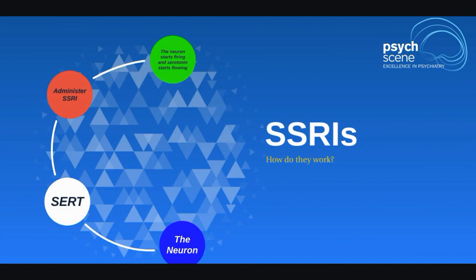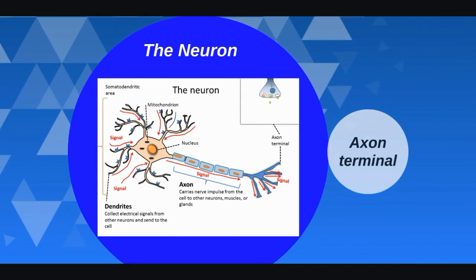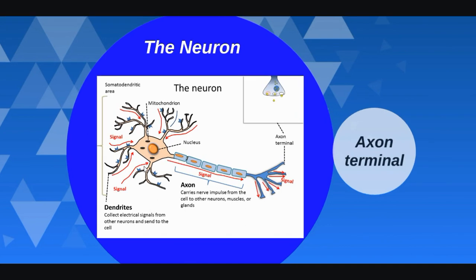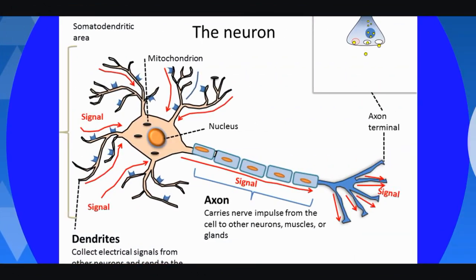The first thing we'll try to understand is what the neuron looks like. We know that there is the axon that carries nerve impulses from the cell to the other neurons, and we have what's called the somato-dendritic area. This somato-dendritic area is important in SSRIs because we have specific receptors called the 5-HT1A auto-receptor, or pre-synaptic receptors, situated there. These receptors act as a brake on the neurotransmitter — if the 5-HT1A receptor is activated, no serotonin will flow because we've stepped on the brake.